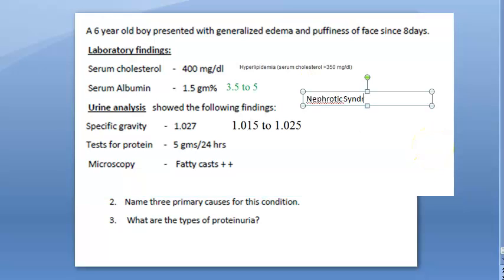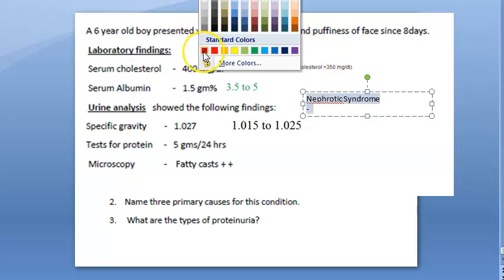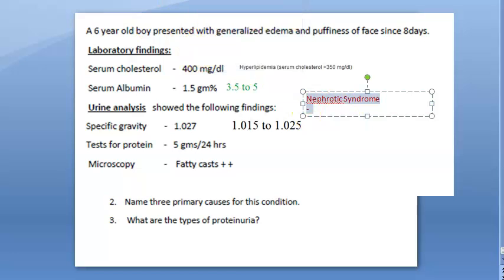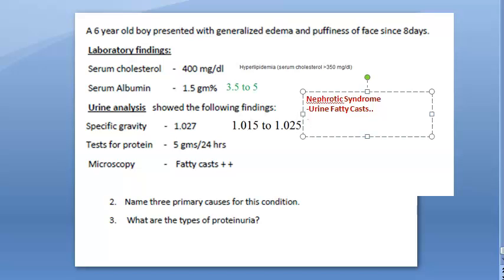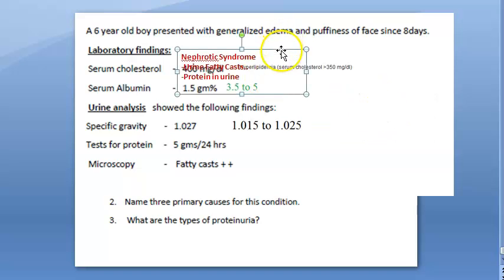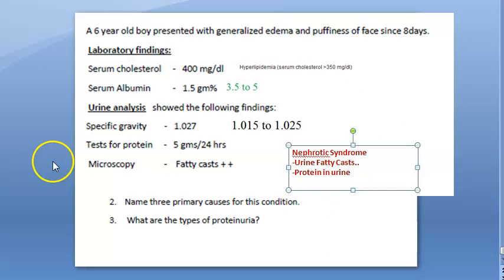Why would you say it is nephrotic syndrome? Because there are fatty casts in the urine. He is also losing albumin into the urine, so there is protein in urine. This fatty cast very clearly indicates nephrotic syndrome.